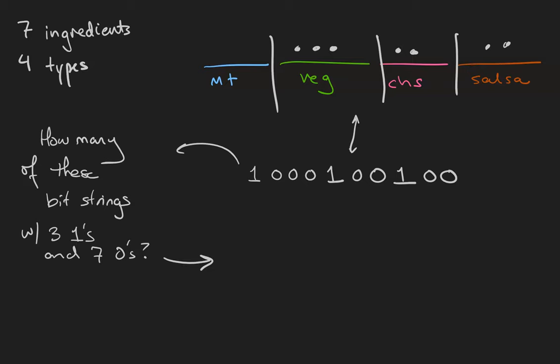It turns out that the idea is that we are choosing three of the characters to be ones out of the 10 total characters of the bit string. And since the order of the ones is irrelevant, this is an unordered sample without replacement because we can't use a character twice. So there are 10 choose 3 or 10 choose 7 such bit strings.